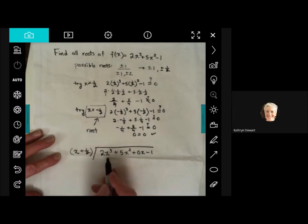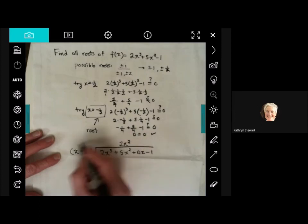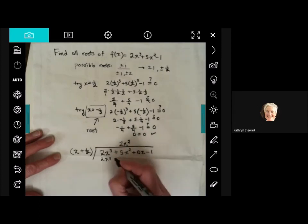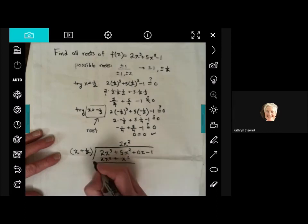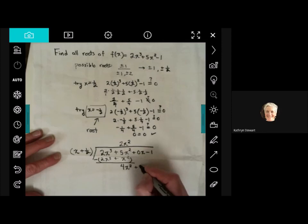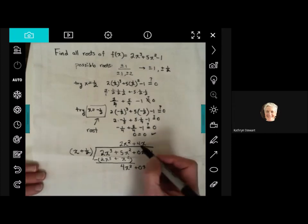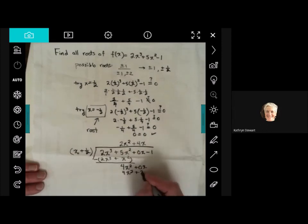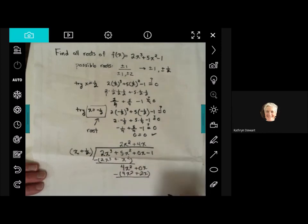I'm going to take that first term. x times what is 2x cubed? And it's 2x squared. 2x squared times x is 2x cubed. 2x squared times 1 half is x squared. And we always need to remember we're subtracting. This first term, by design, always becomes 0. 5x squared minus x squared is 4x squared. And you bring down the next term. And again, that's my 0x. That's a little funny, but I think we will find it useful in a moment. x times what is 4x squared? 4x. So 4x times x is 4x squared. 4x times 1 half is plus 2x. And we subtract. 4x squared minus 4x squared is 0. 0x minus 2x is negative 2x. Do you see how handy that was to have that placeholder there? And now I bring down the next term.